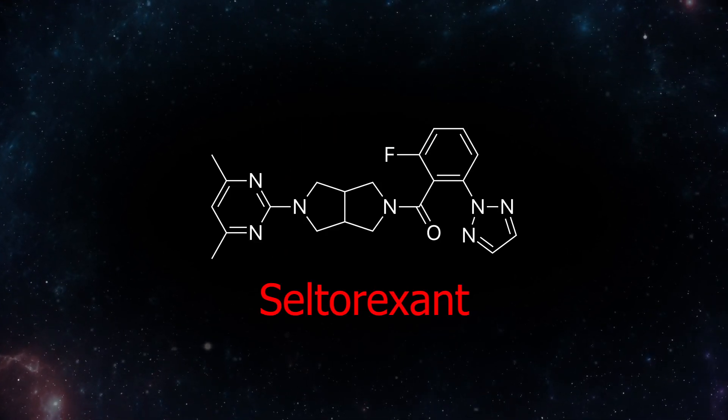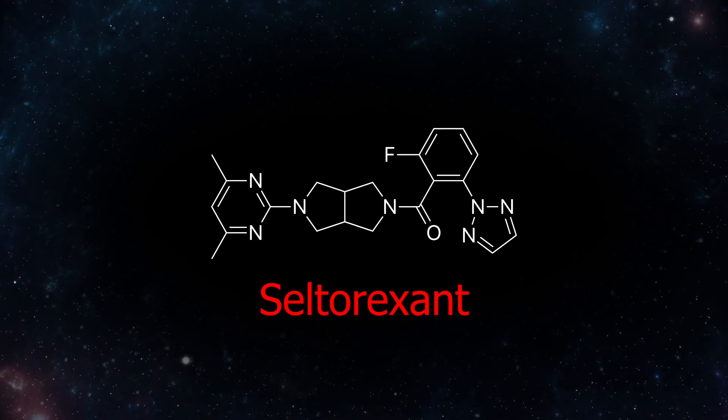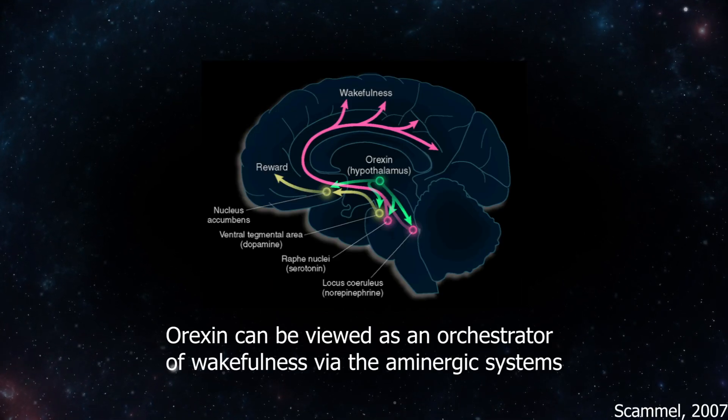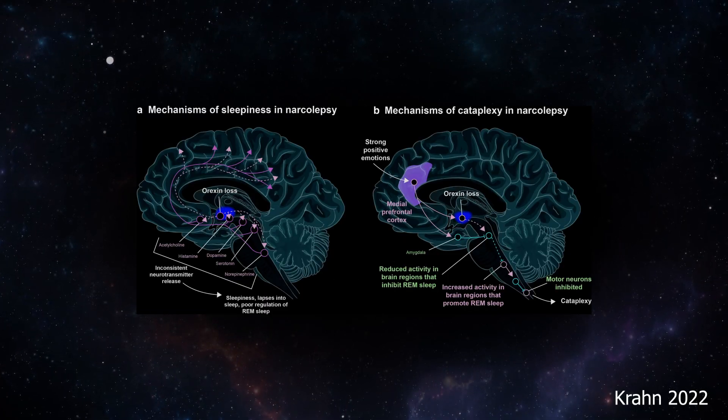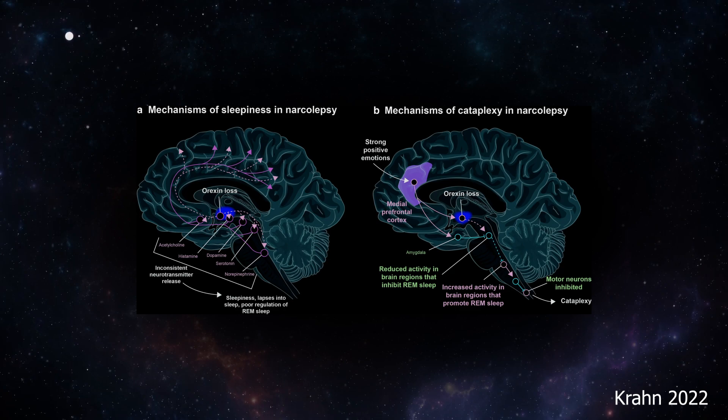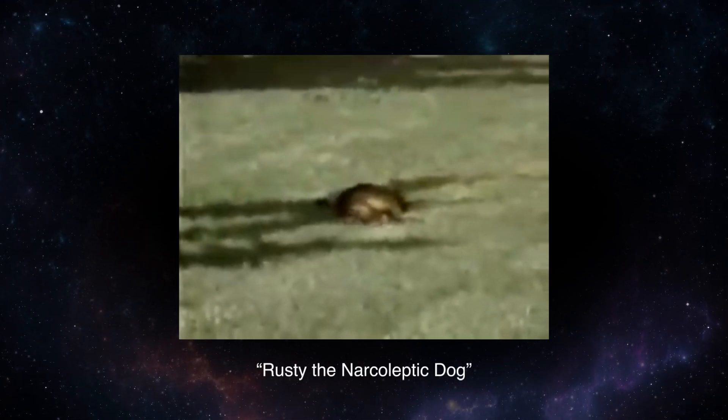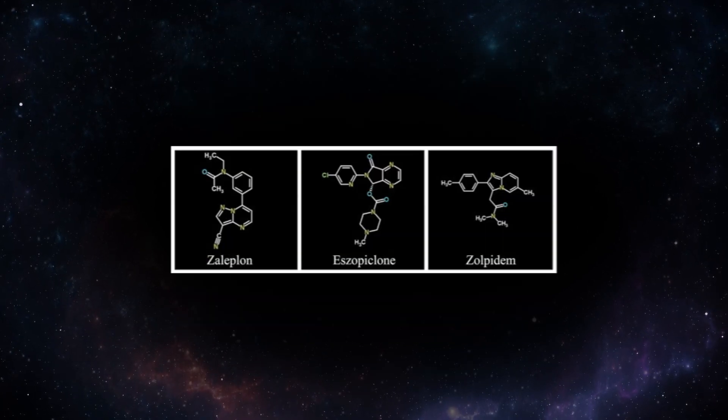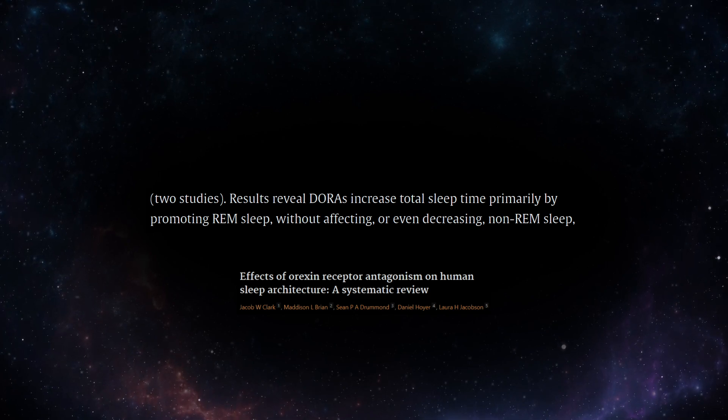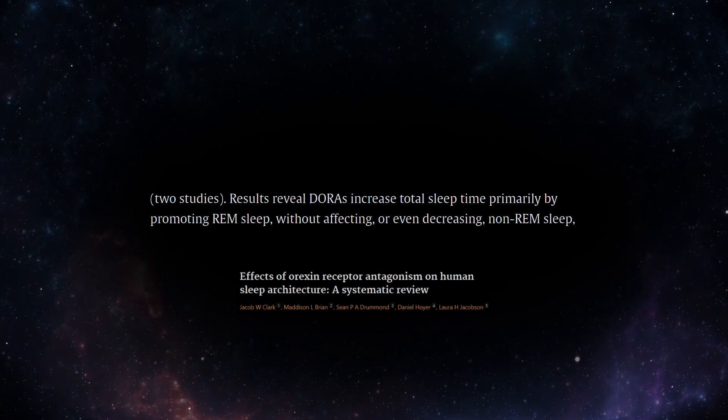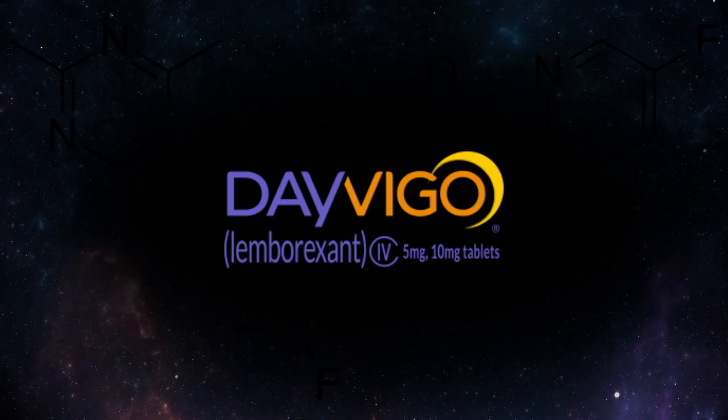Seltorexant is a second-generation orexin antagonist in clinical development for the treatment of insomnia and depression. The orexin system is heavily involved in wakefulness promotion, and the selective destruction of orexin neurons is now known to underlie the pathology of narcolepsy. Therefore, first-generation orexin antagonists were developed as a selective means of inducing sleep.